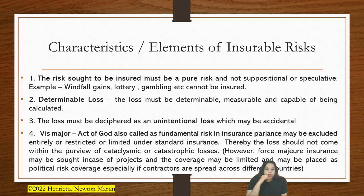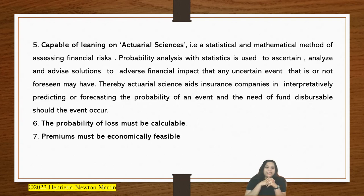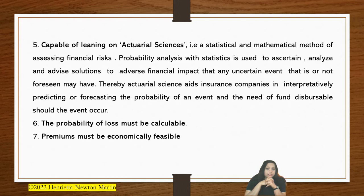Next is capable of leaning on actuarial sciences. The underwriters of the insurer would check whether a particular risk sought to be covered is capable of leaning on actuarial sciences. Actuarial science is a statistical and mathematical method of assessing financial risks. There is probability analysis with statistics used to ascertain, analyse, or advise solutions to adverse financial impact that any uncertain or unforeseen event would cause. Actuarial science aids insurance companies in interpretatively predicting or forecasting the probability of an event and the need for fund dispersal should the event occur.